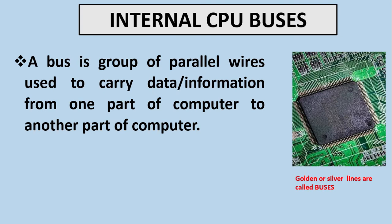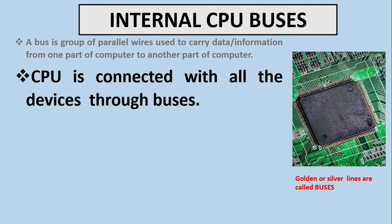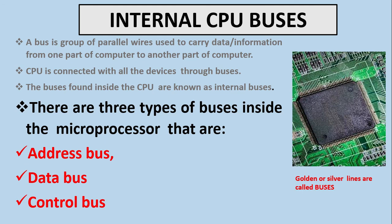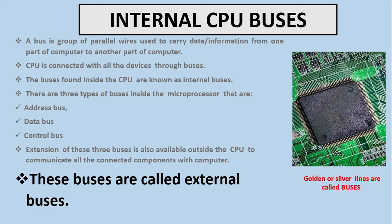A bus is a group of parallel wires used to carry data or information from one part of the computer to another. The CPU is connected with all devices through buses. The buses found inside the CPU are known as internal buses. There are three types of buses inside the microprocessor: address bus, data bus, and control bus. Extensions of these three buses are also available outside the CPU to communicate with all connected components, and these are called external buses.